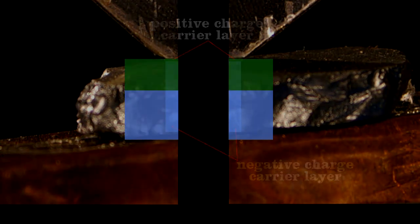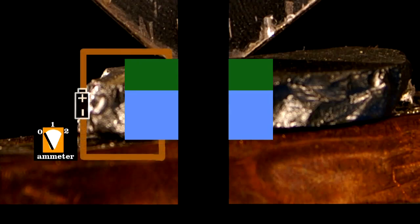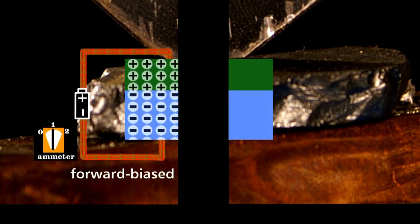Now, even though that top layer is very thin, I've exaggerated it here to make the operation of the transistor clear. On the left, we attach a small battery with its positive terminal connected to the top layer. This allows current to flow.